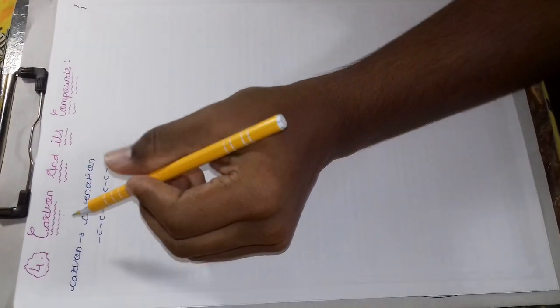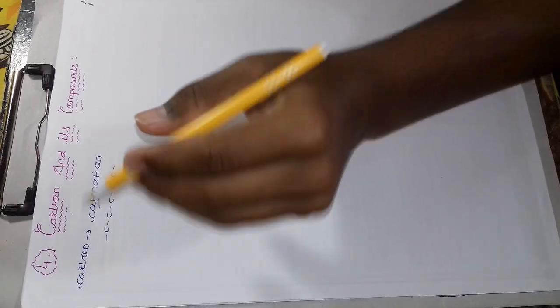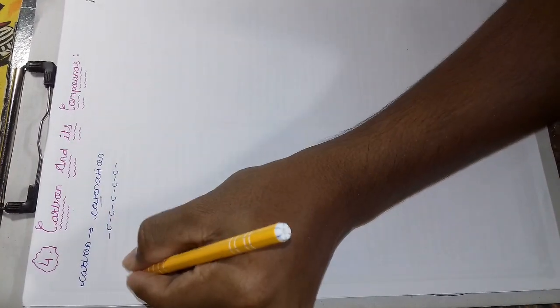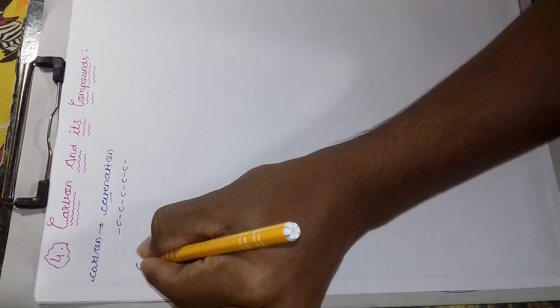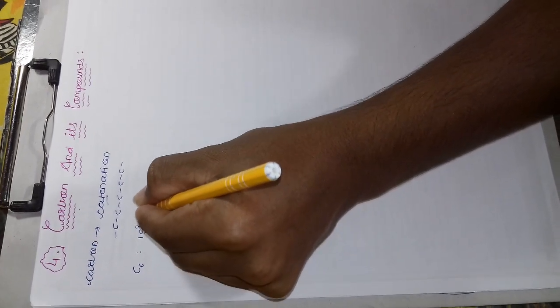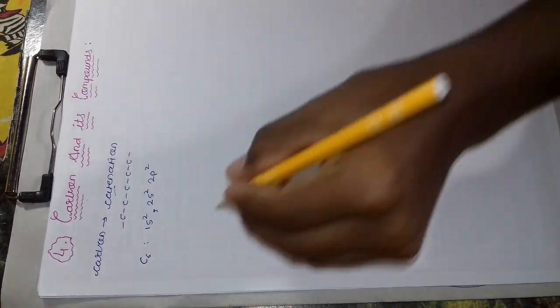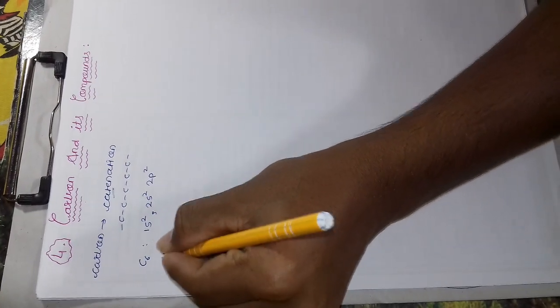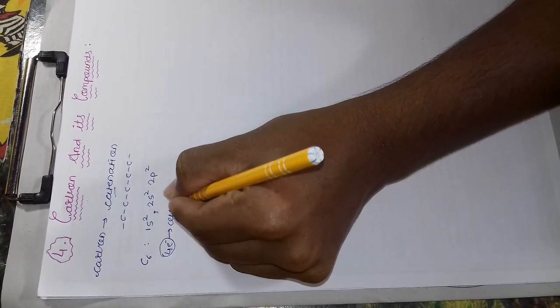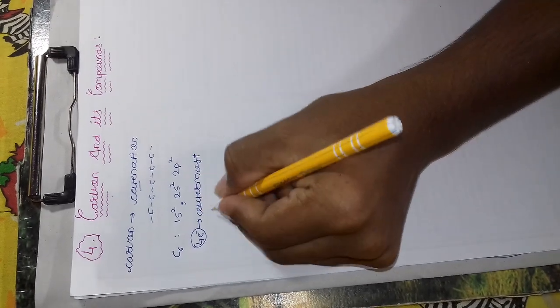So, why does Carbon show the property of Catenation? Because to fulfill the requirement of its octet of electrons. Since Carbon has atomic number six, its electronic configuration is 1s2, 2s2 and 2p2. The outermost shell of Carbon has four electrons. Four electrons are present in the outermost shell.